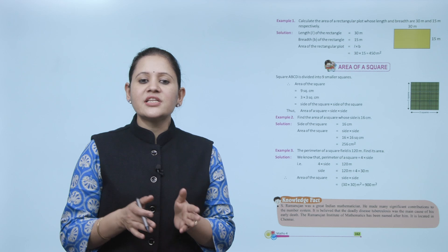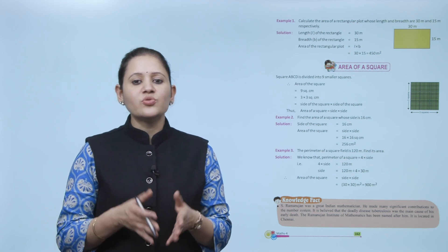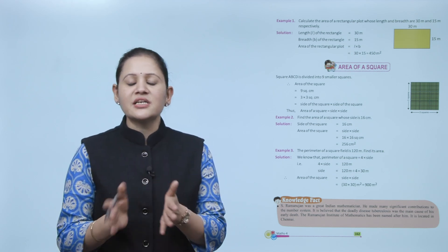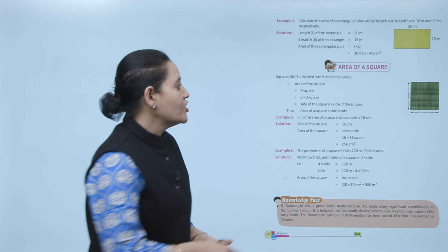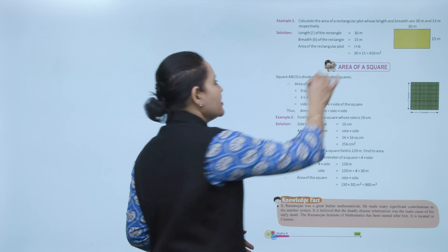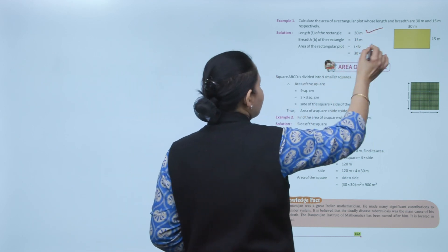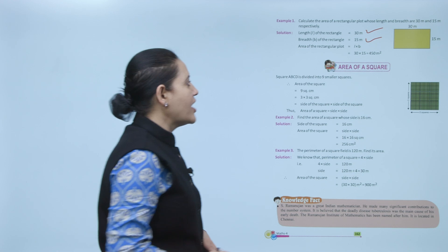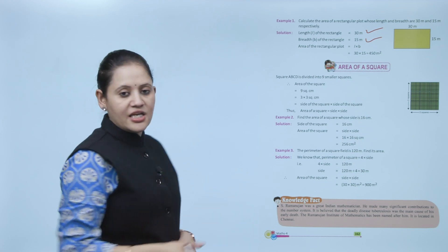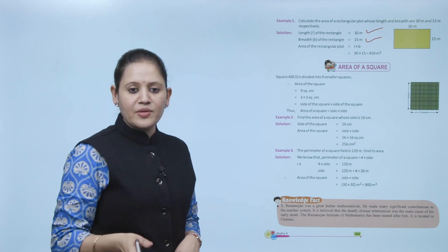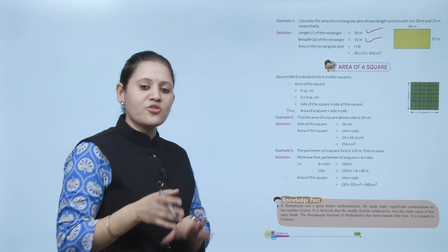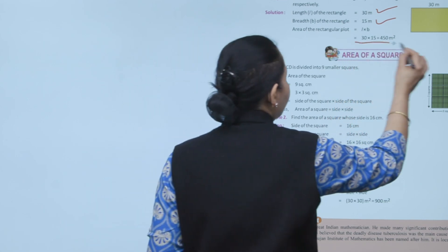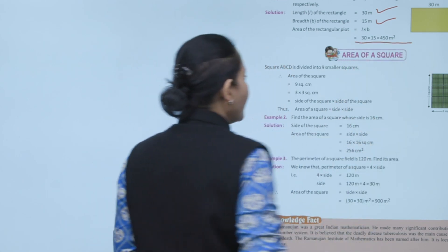Calculate the area of a rectangular plot whose length and breadth are 30 meters and 15 meters respectively. Length is 30 meters, breadth is 15 meters. Area of rectangular plot equals L into B, which is 30 into 15, equals 450 meter square.